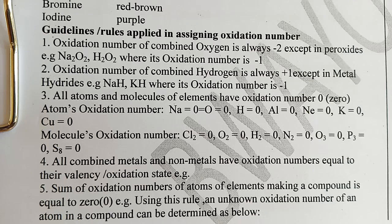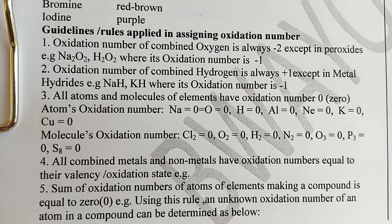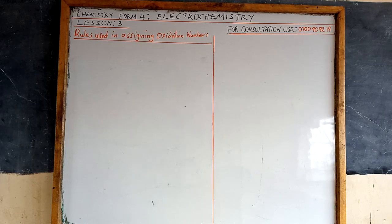Rule number five: the sum of oxidation numbers of atoms of elements making a compound is equal to zero. Using this rule, we can determine the oxidation number of an atom in a compound. Let me illustrate how to use oxidation rule number five and its application.